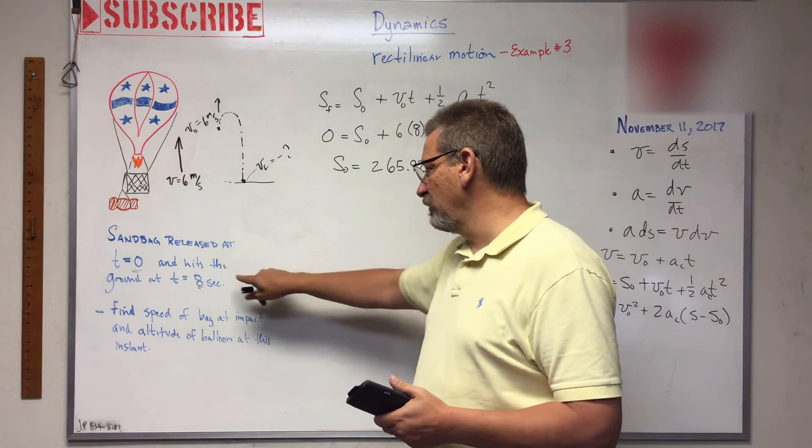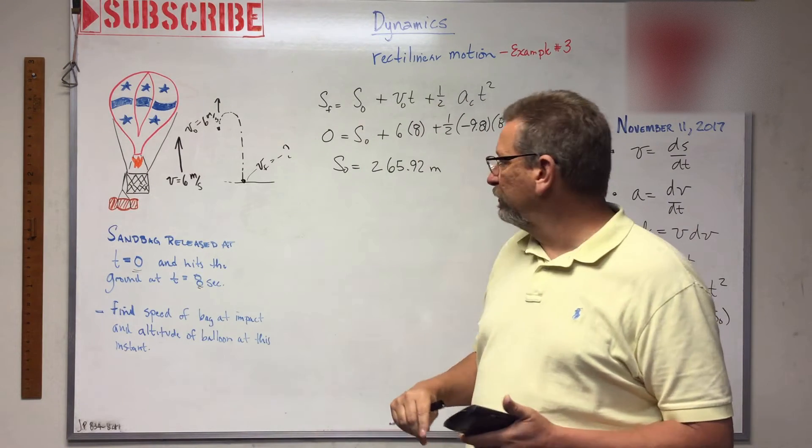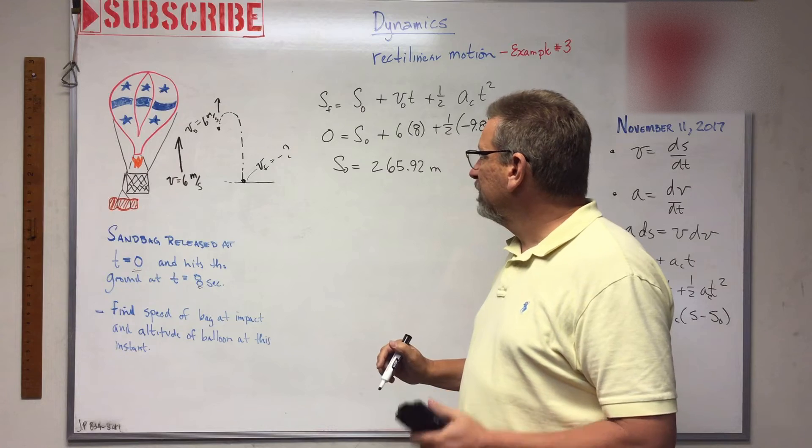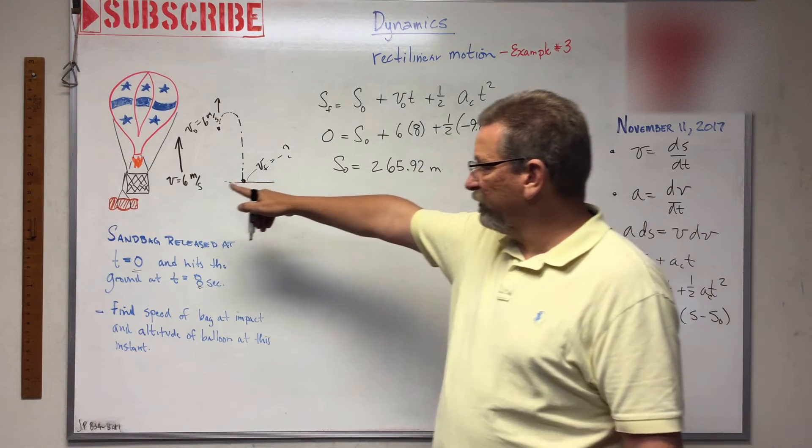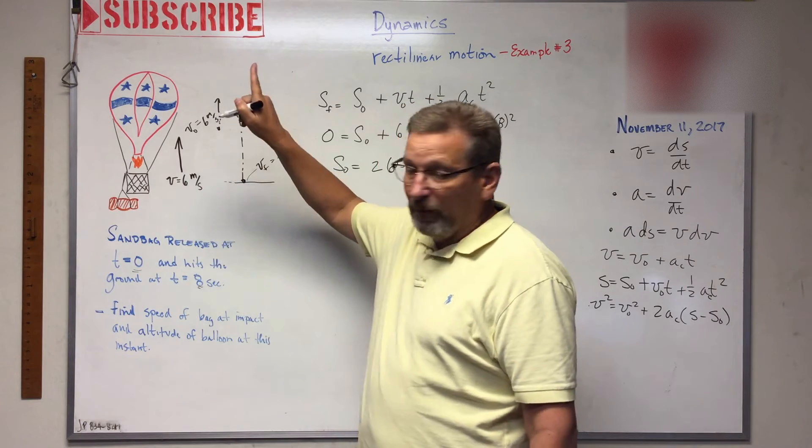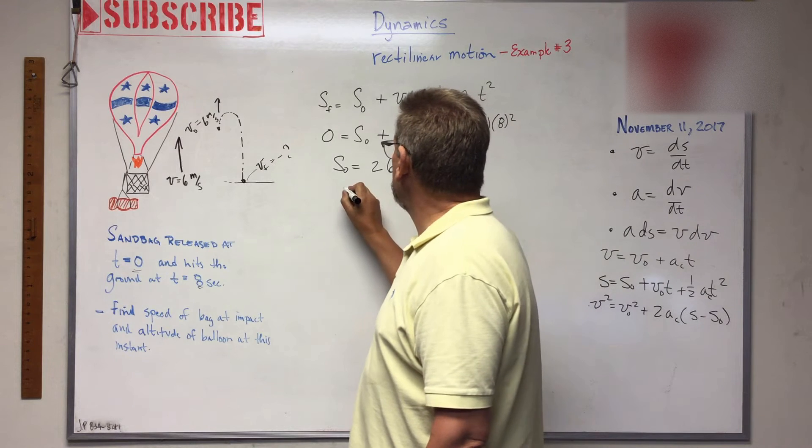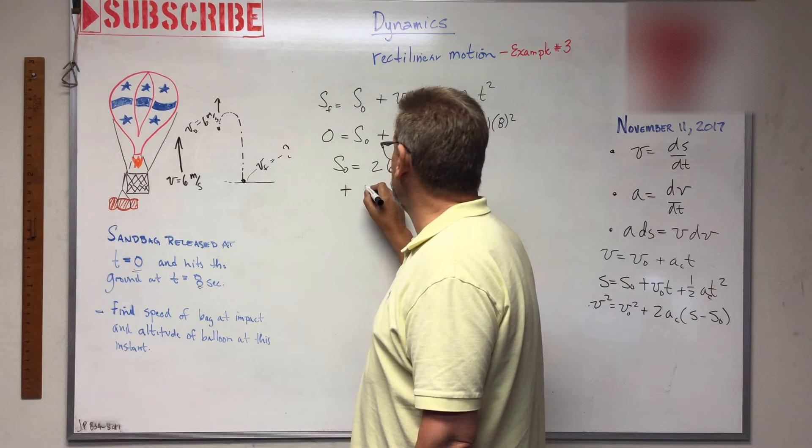So that kind of answers one of the questions - that's where the balloon was at t=0, that tells the altitude. You know what, in eight seconds, after the sandbag was dropped, if it continued to go up for another eight seconds, how far would it have gone? Well, it would have gone another six meters per second times eight seconds equals 48 more meters, right?